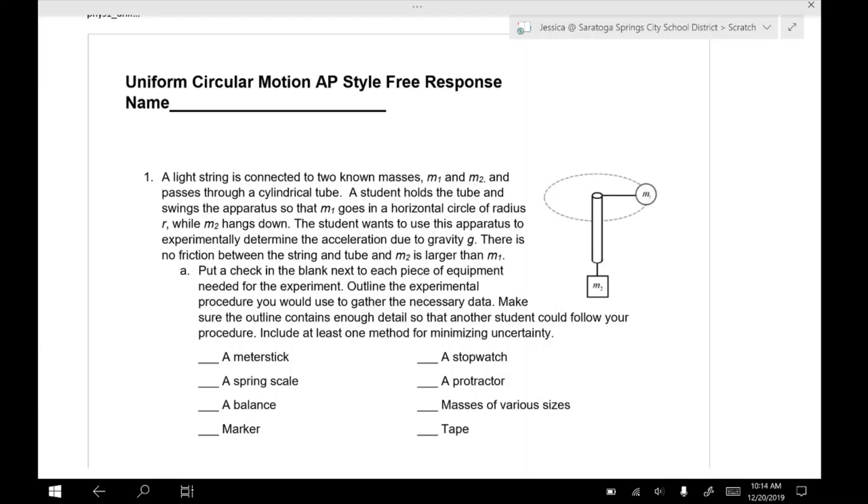So in question number one, we have a light string connected to two unknown masses, M1 and M2, passing through a cylindrical tube. Student holds the tube and swings the apparatus so that M1 goes in a horizontal circle of radius R while M2 hangs straight down. The student wants to use this apparatus to experimentally determine the acceleration due to gravity. There is no friction between the string and the tube and M2 is larger than M1.